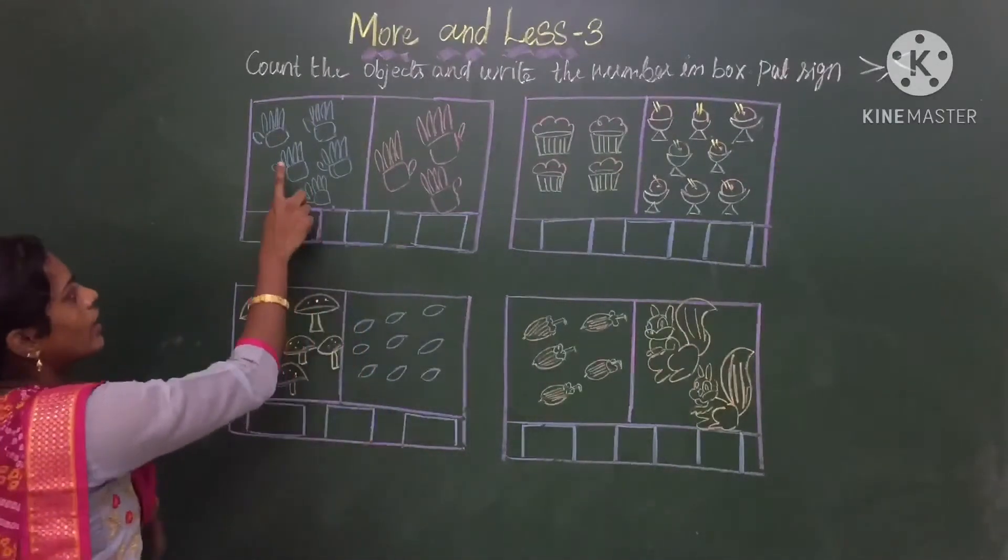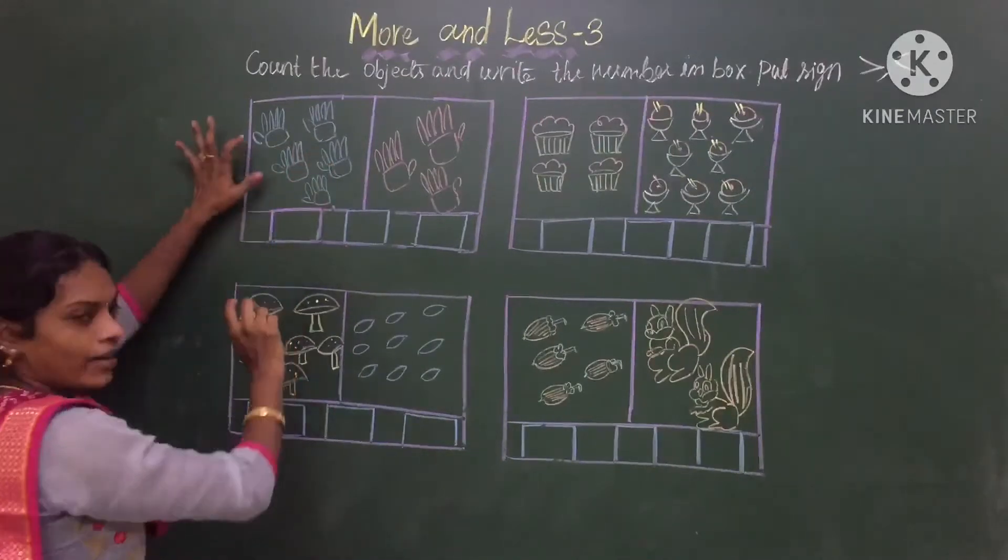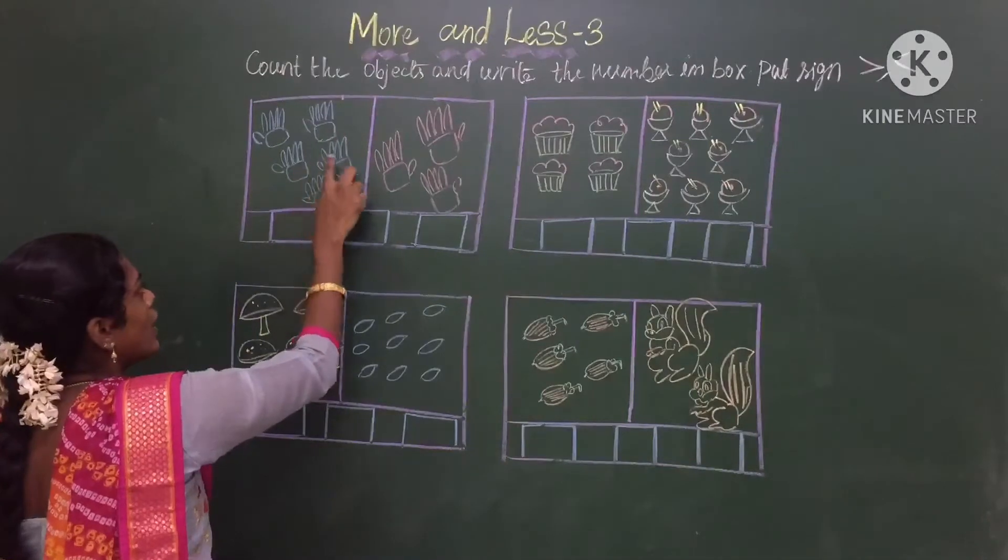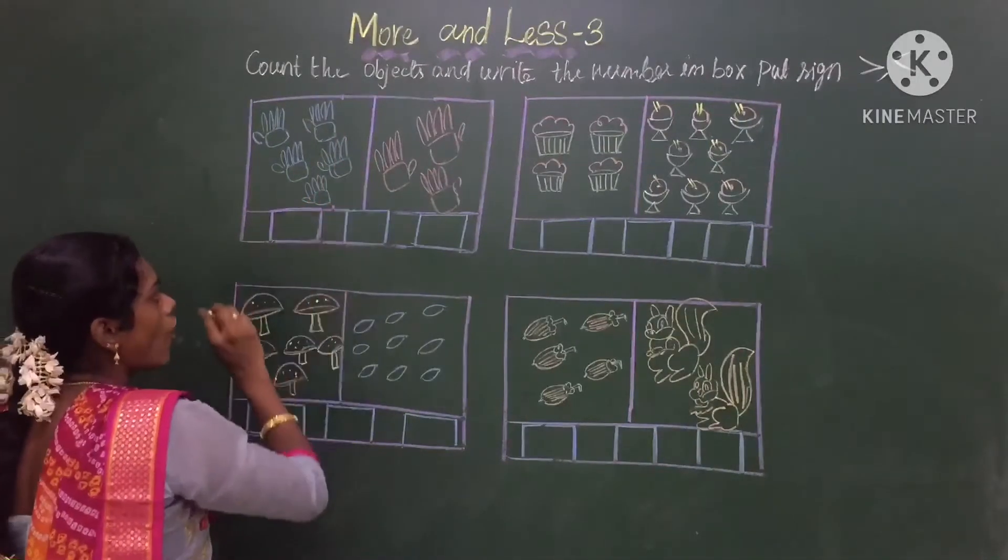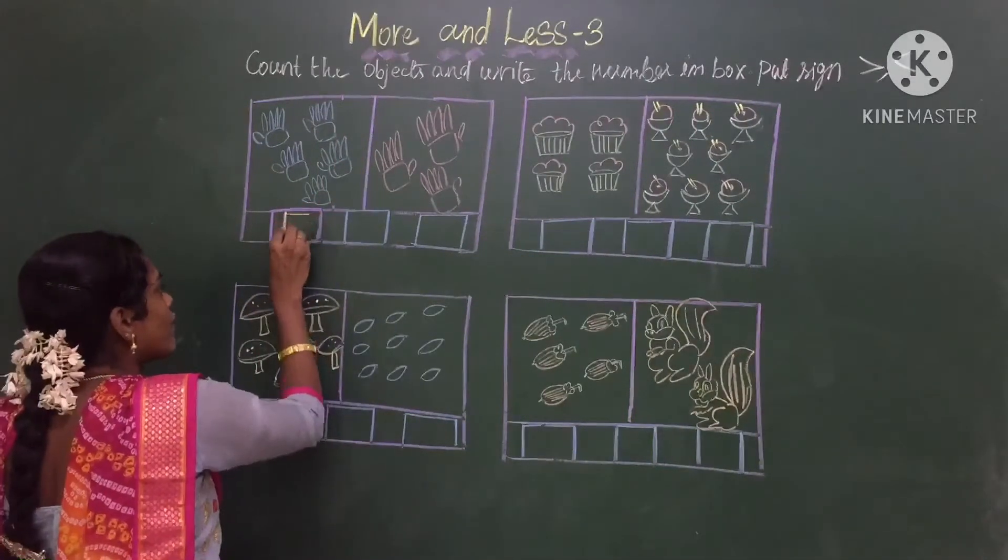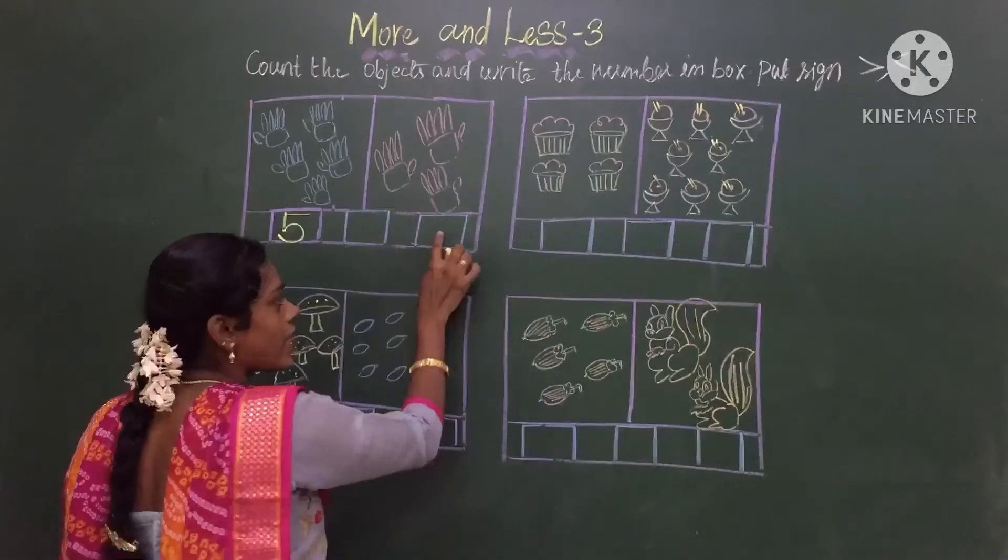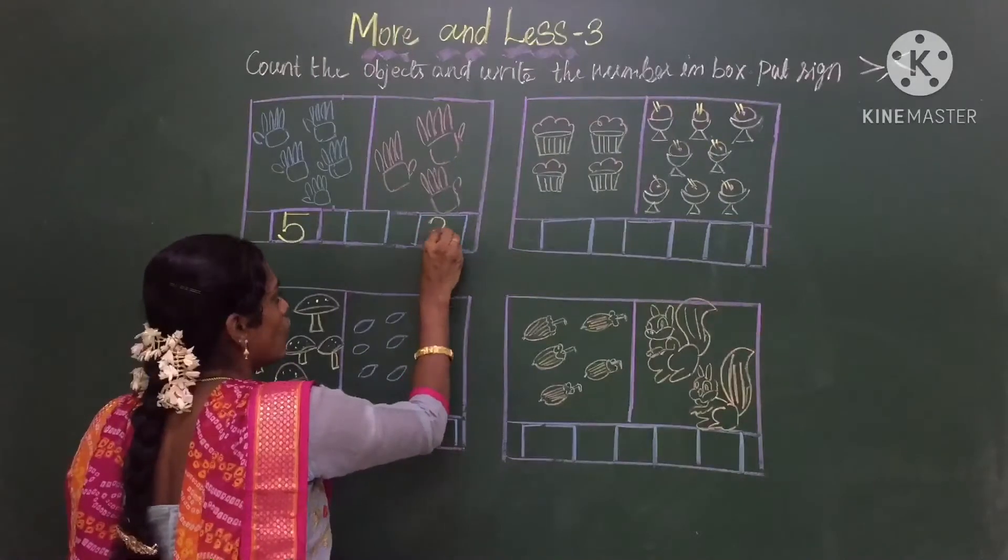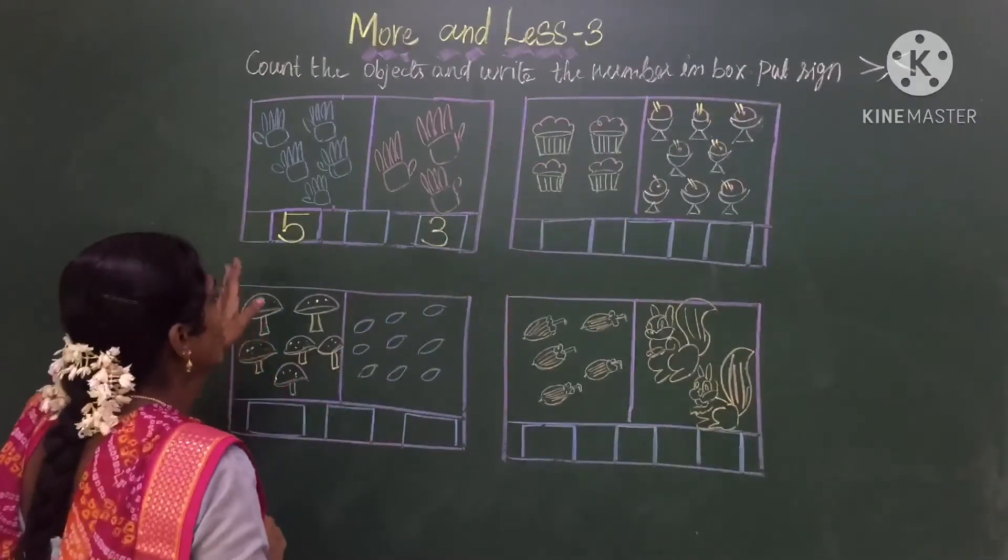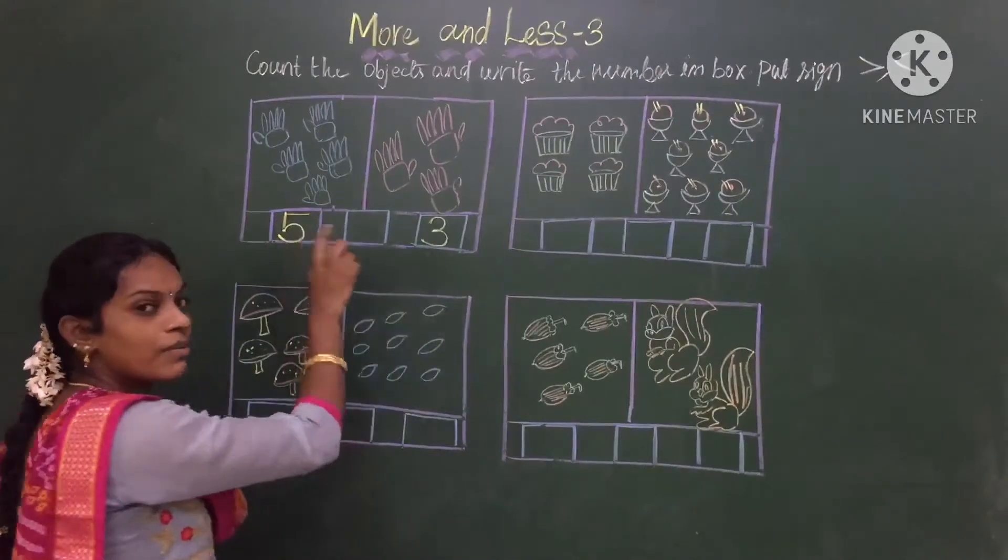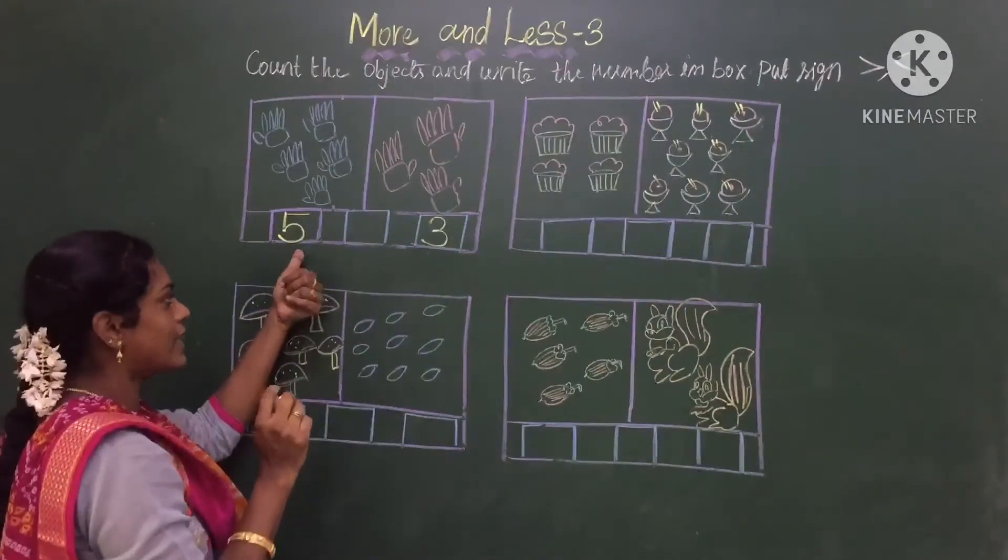First we will count the print of the hand. Let us count: 1, 2, 3, 4, 5. So how many prints are there handwritten? 5. So let us count this side: 1, 2, 3. So I will write here in the box 3. Now we have to see which number is more. Now see 5, 3. Which number is more children? This side is more.